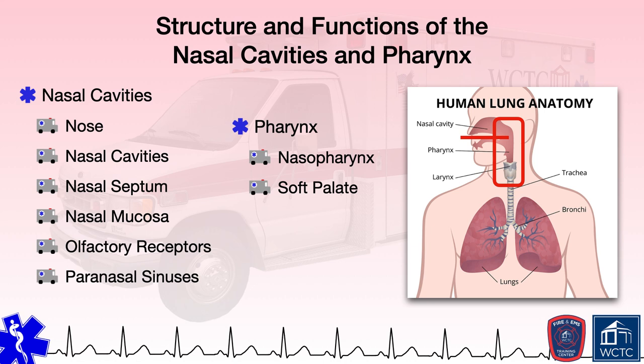Toward the posterior, the palate is called the soft palate because the anterior bone terminates and the separation between the nasal and oral cavities is maintained by soft tissues, including muscular fibers, mucous membranes, and mucous glands. When a person swallows, the soft palate moves upward, forming a seal between the nasopharynx and oropharynx to prevent food from moving back up into the nasal cavity.